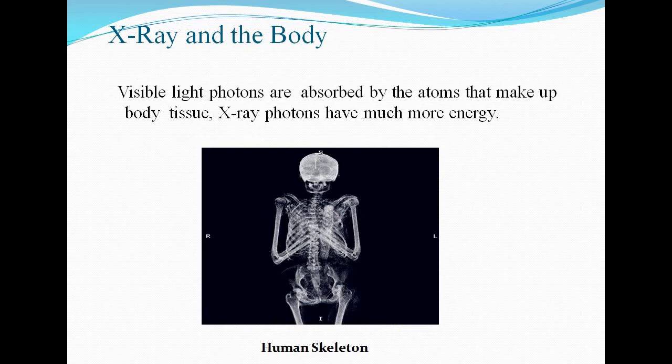X-ray and the body. Visible light photons are absorbed by the atoms that make up body tissues. X-ray photons have much more energy. A larger atom is more likely to absorb an X-ray photon in this way, because larger atoms have greater energy difference between electron orbitals. Smaller atoms where the electron orbitals are separated by relatively low energy jumps are less likely to absorb X-ray photons.